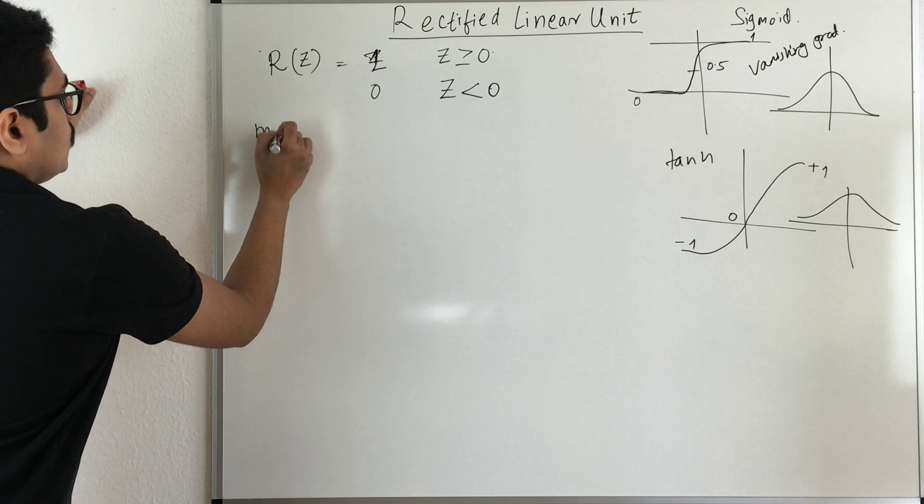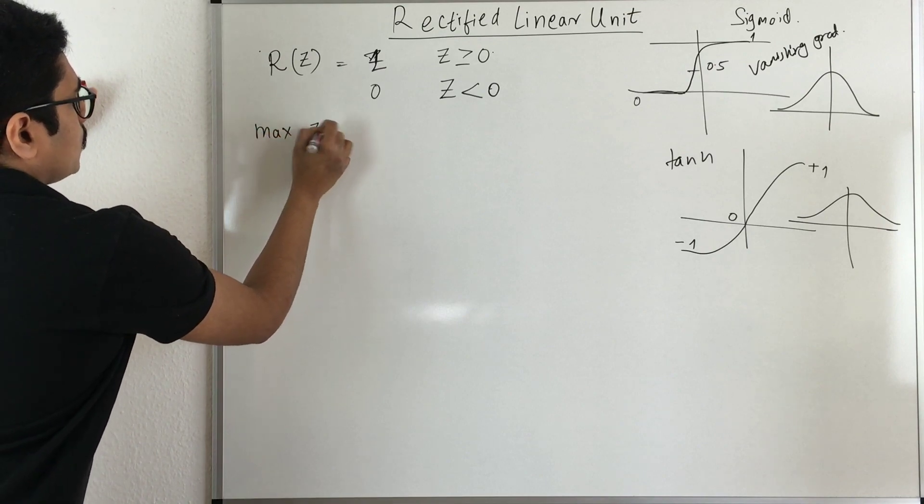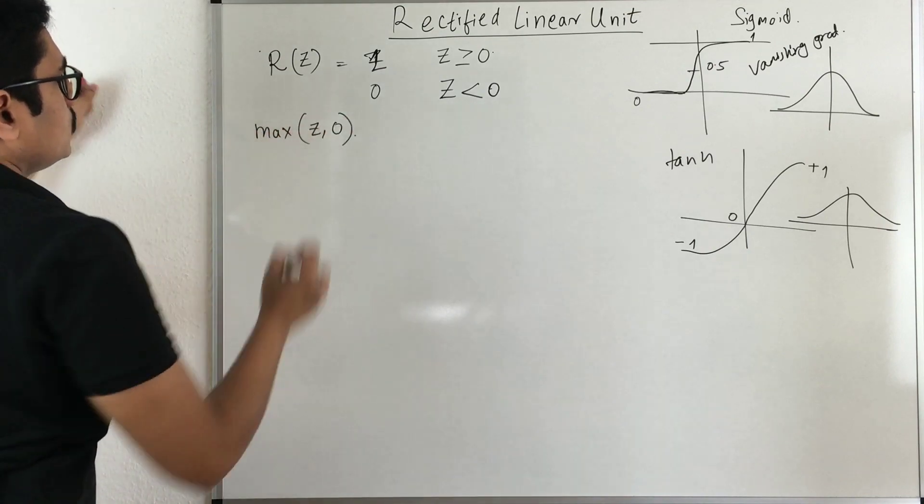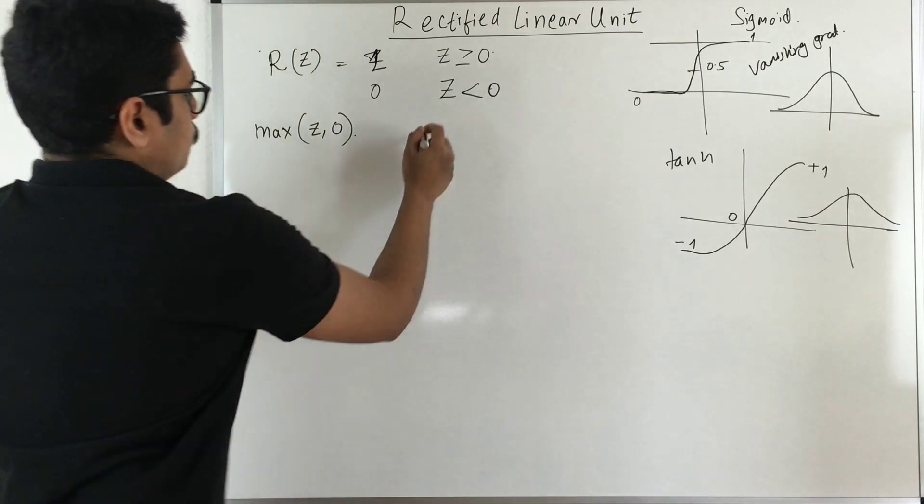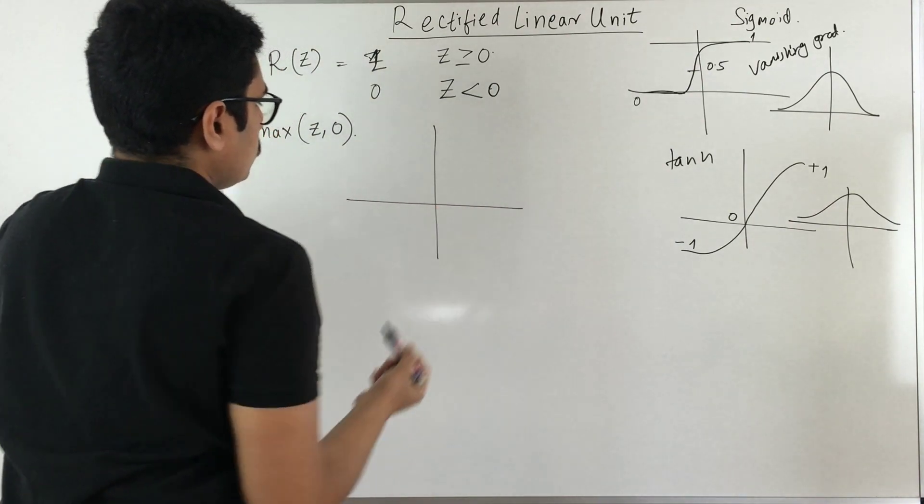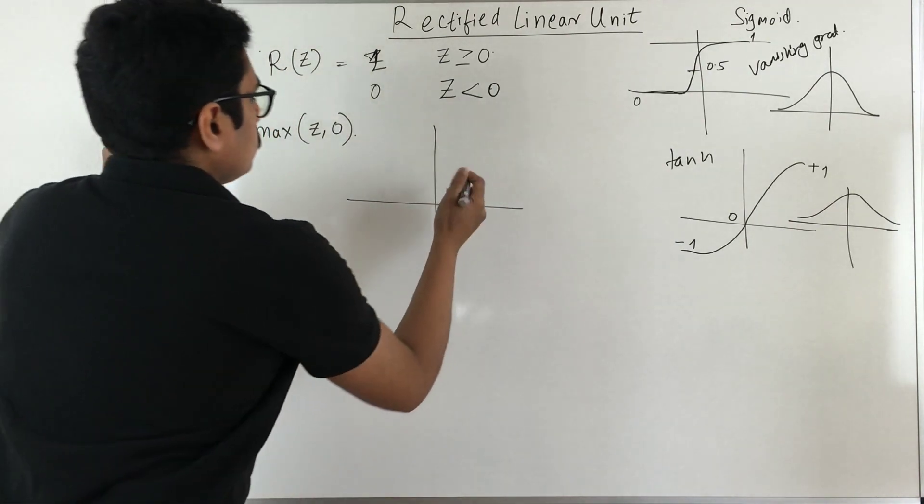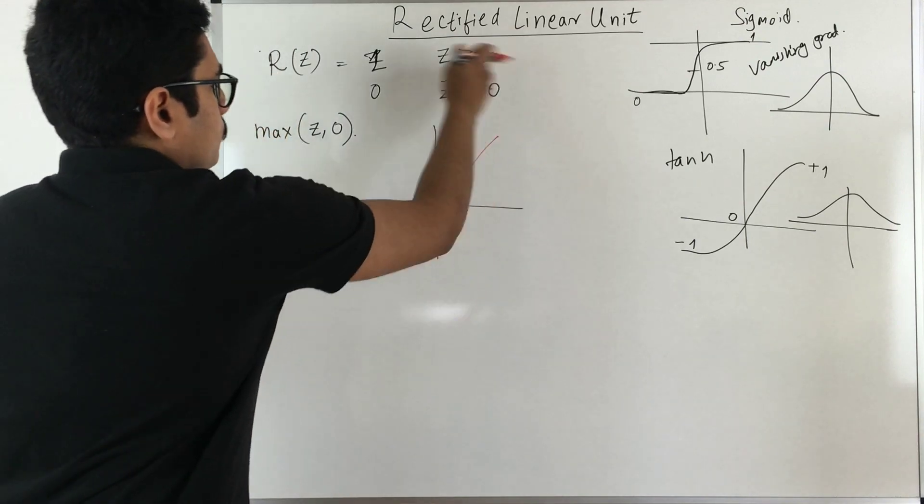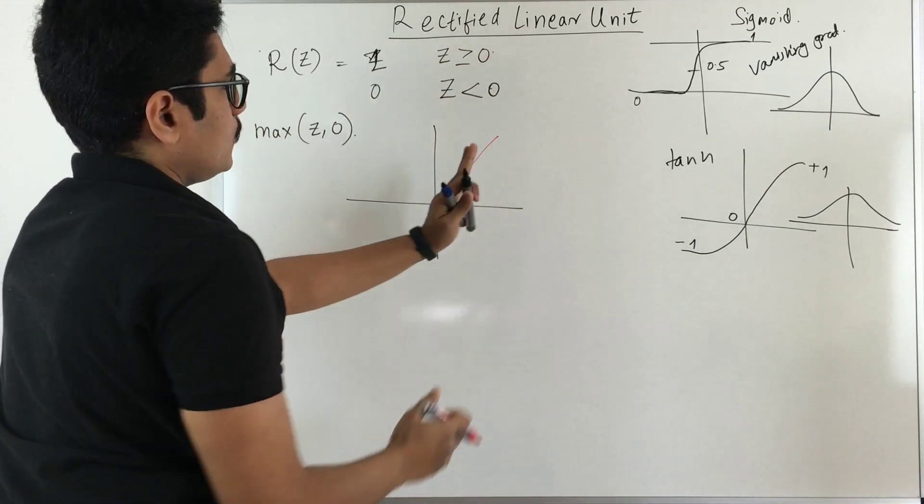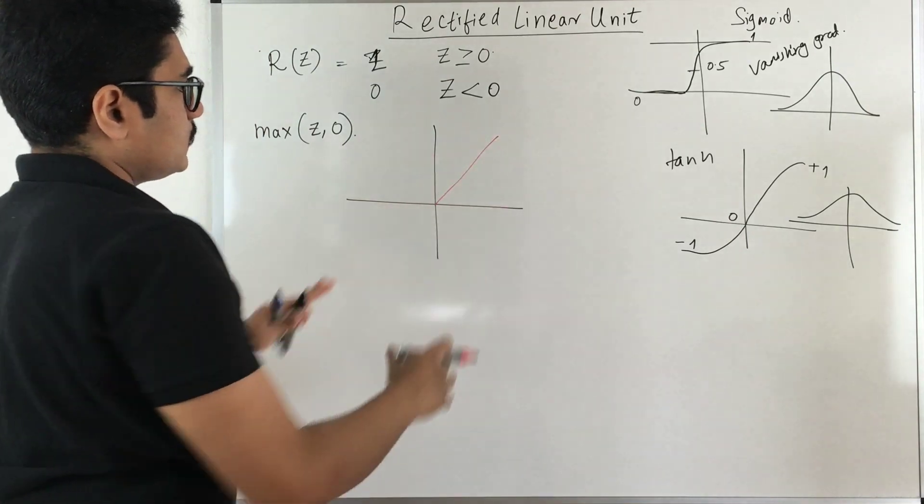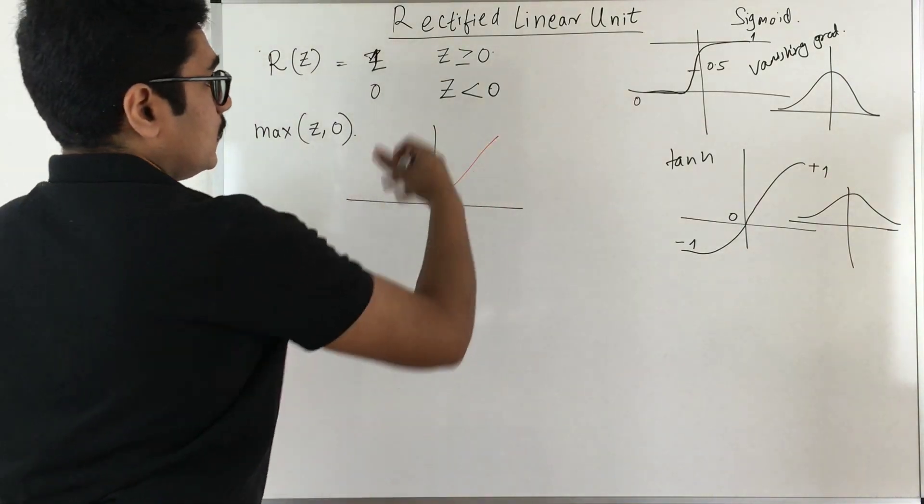Or in fact it says it is z. So the range of ReLU function is a maximum value between z and 0. So if you want to visualize this, this particular graph looks something like this.